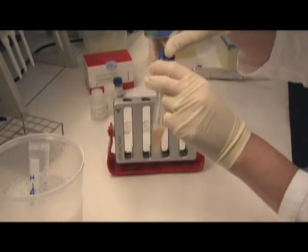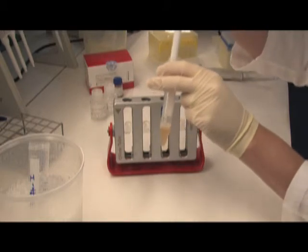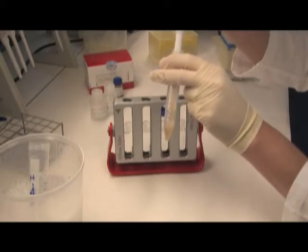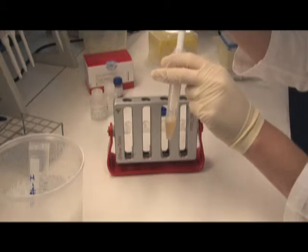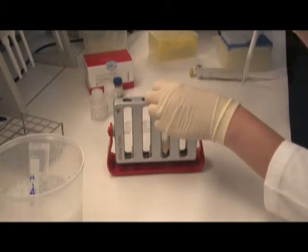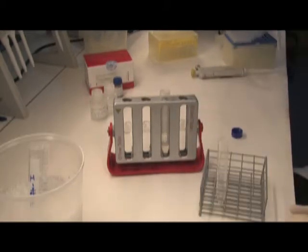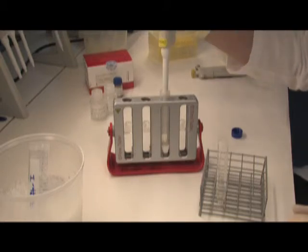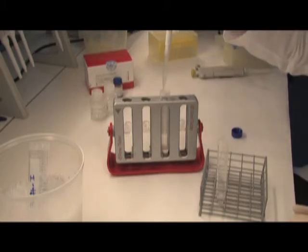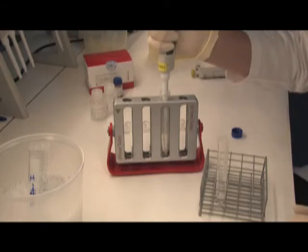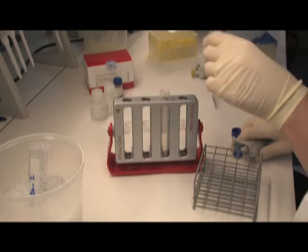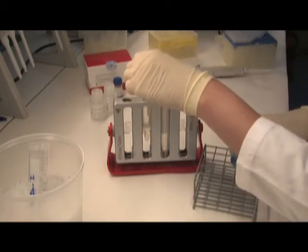Mix the cells by gently pipetting 5 times and place the tube in the magnet for 1 to 5 minutes. Transfer the supernatant containing the bead-freed cells to a new tube. Place the tube in the magnet for 1 to 5 minutes to remove all residual beads.